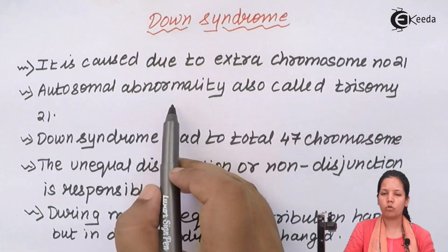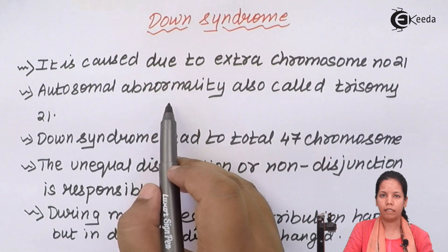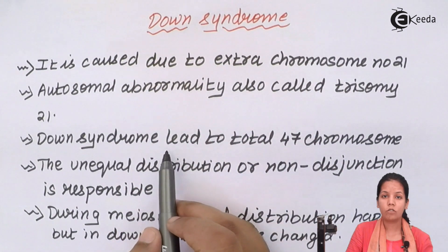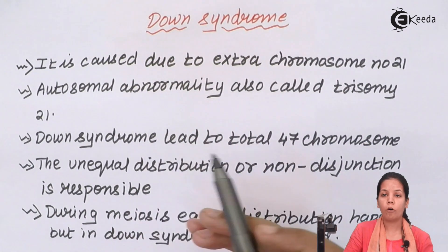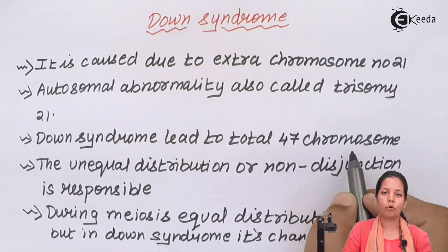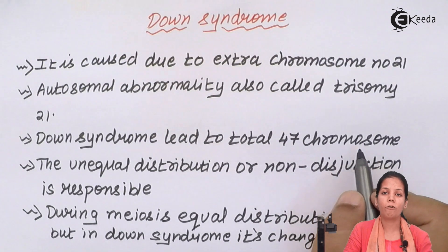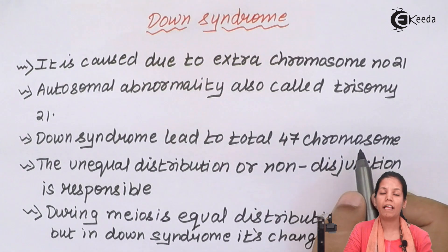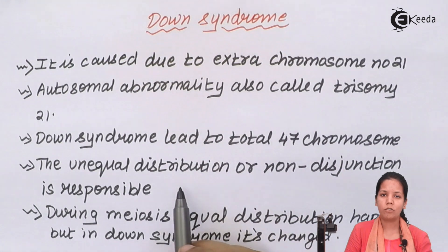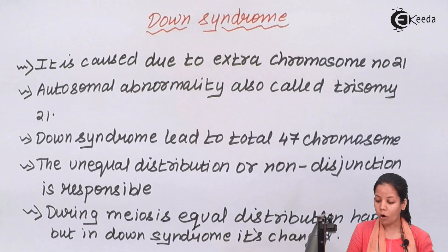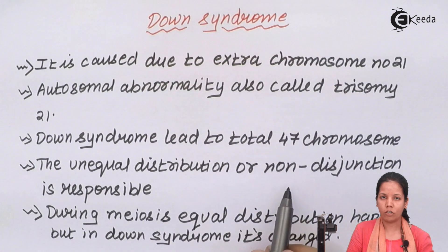It is an autosomal abnormality. Down syndrome leads to a total of 47 chromosomes inside a cell. Remember, we as normal human beings have 46 total chromosomes — they have an extra one. This happens due to unequal distribution or non-disjunction.